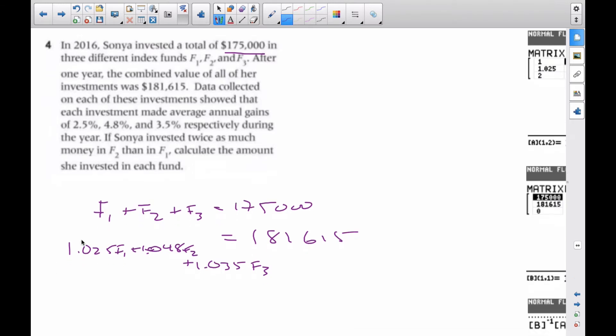And then finally, the last bit is that she invested twice as much in F2 than in F1. So if I think about this, I know that F2 does not equal F1. There's more money in F2. So if I want them to be equal, then I have to make this 2. So if I rearrange it, I know that 2F1 minus F2 is equal to 0.